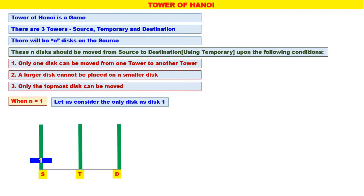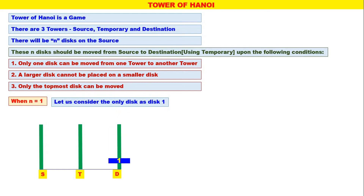How to move? Disk number 1 is moved from Source to Destination. So, move disk 1 from S to D. That is all — only one move is required. When there is only one disk, one move is required. You move from Source to Destination. That is all.